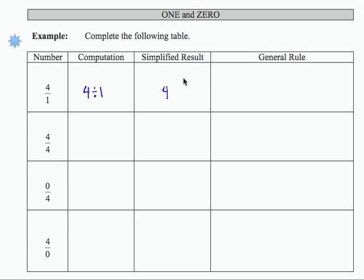So if we wanted to create a general rule, let's write here that A is any number, and let's use A to represent, in general, if we had any number A divided by 1, the result would just be A.